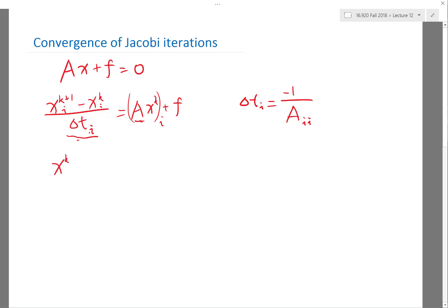Okay, so the resulting scheme is: x^(k+1)_i - x^k_i would be equal to... let's actually separate the diagonals. The diagonals are going to be delta t_i times a_ii times x^k_i, and then I need to multiply delta t_i times (A minus the diagonal of A) times x^k at the i-th entry, plus delta t_i times f_i.